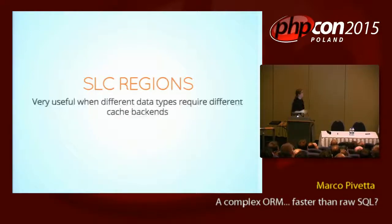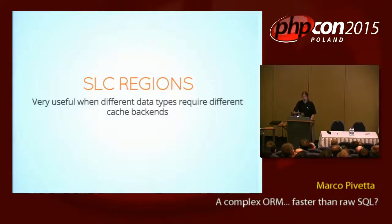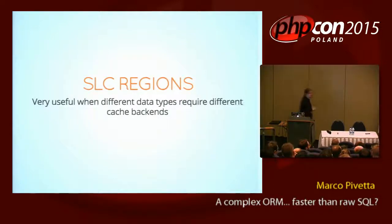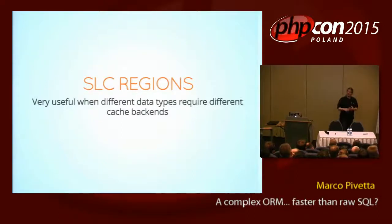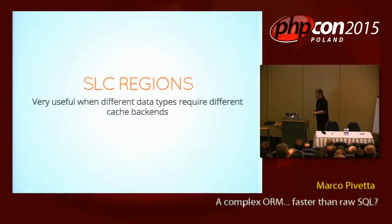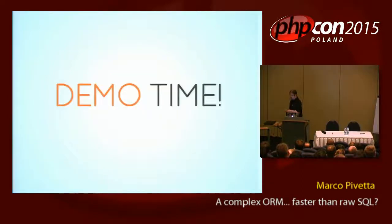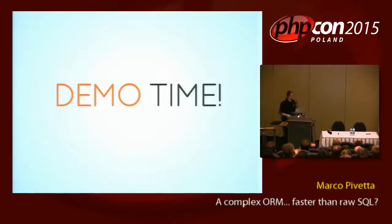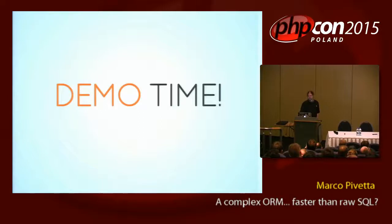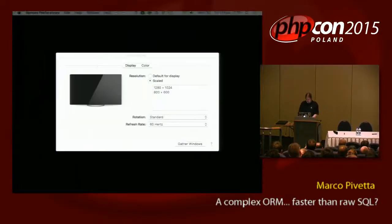So, regions: you just have different structures going to different systems. You may want to save users into memcache, ACLs into a file, and other information in Redis. That's up to you — this is fine-tuning. Let's see a bit of demo stuff.